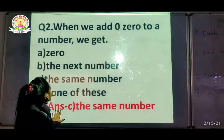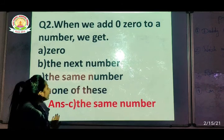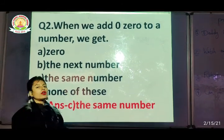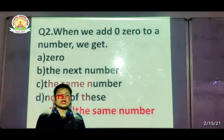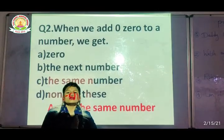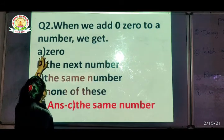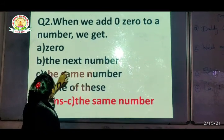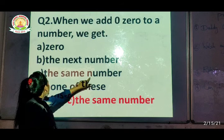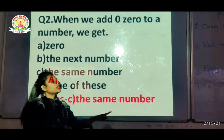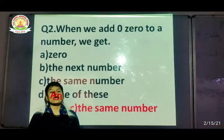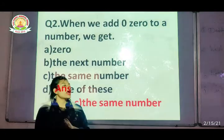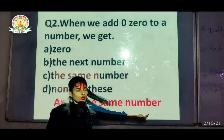Now the second question is: when we add 0 to a number, what do we get? Option A is 0, option B is the next number, option C is the same number. So if we add 0 to a number, our answer is the same number. Okay.